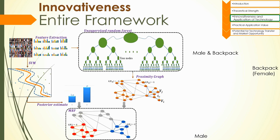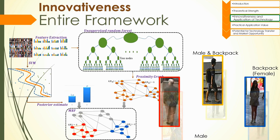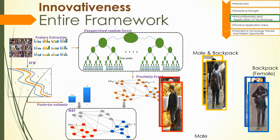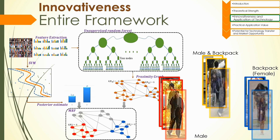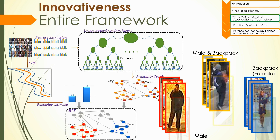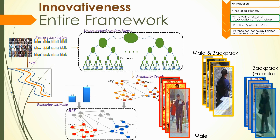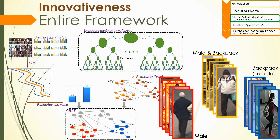Specifically, the entire framework can be visualized here. After feature extraction, we get the posterior probability by a support vector machine, and we construct a proximity graph by a supervised random forest. Finally, the attributes can be jointly predicted on our Markov random field graph.